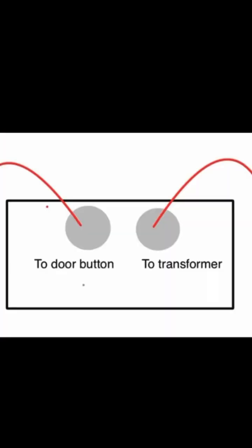Inside the chime you're going to see two red wires. One of them is going to be connected to your transformer, and one of them is going to be connected to the front door or wherever the doorbell button is.